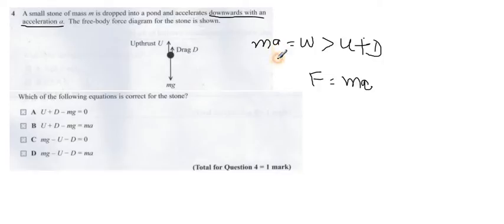Which of the following equation is correct for the stone? As the stone is accelerating downward, weight is greater than upthrust plus drag. The difference between these two forces will give you the net force. Net force F is basically MA, and remember W is Mg. That means Mg minus U minus D must equal to net force. In these options, if you see D, Mg minus U minus D is equal to net force. So your option is D.